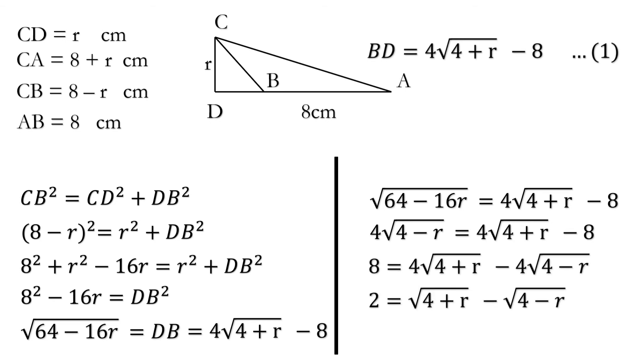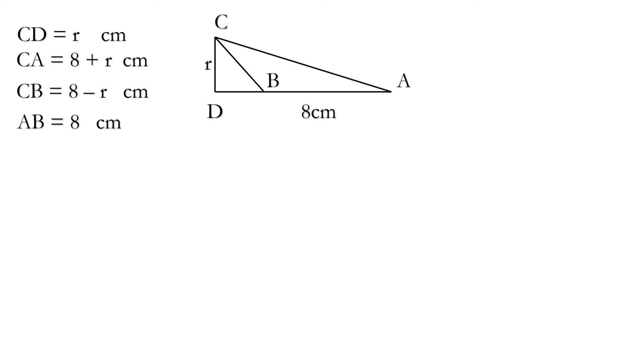Now dividing whole equation with 4 we have 2 is equal to root 4 plus R minus root 4 minus R. Squaring both sides we get 4 is equal to 4 plus R plus 4 minus R minus 2 root 4 minus R root 4 plus R.